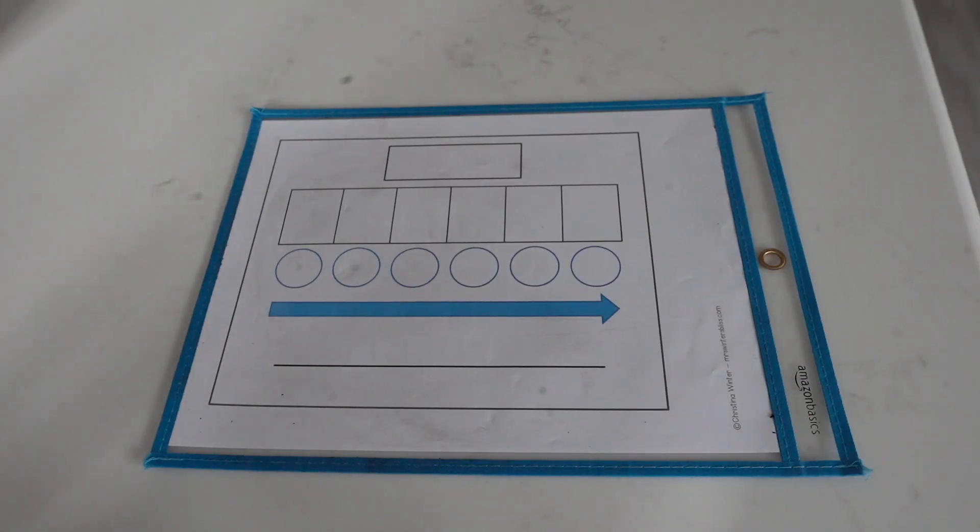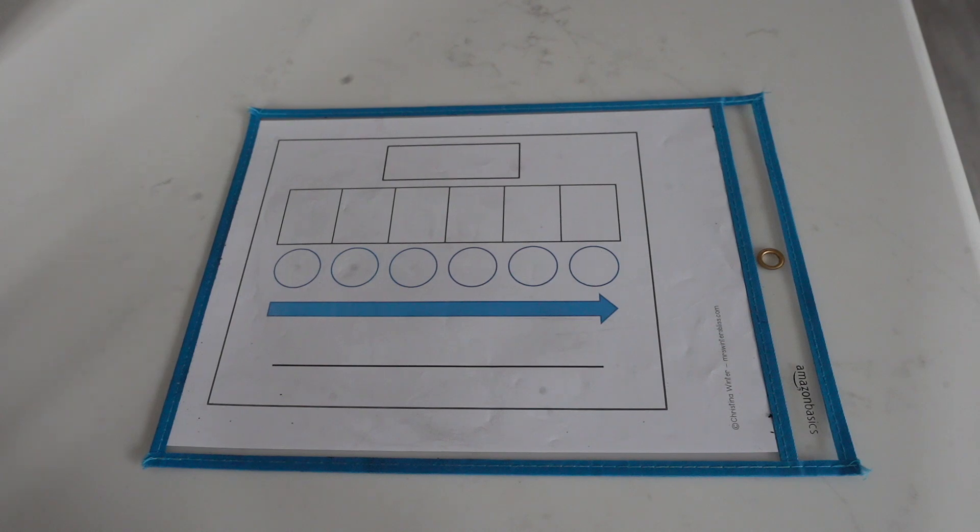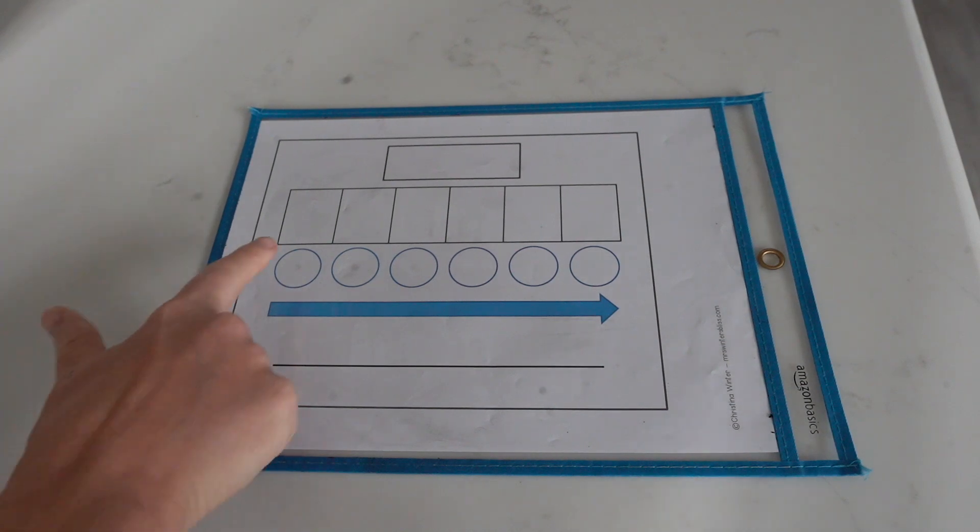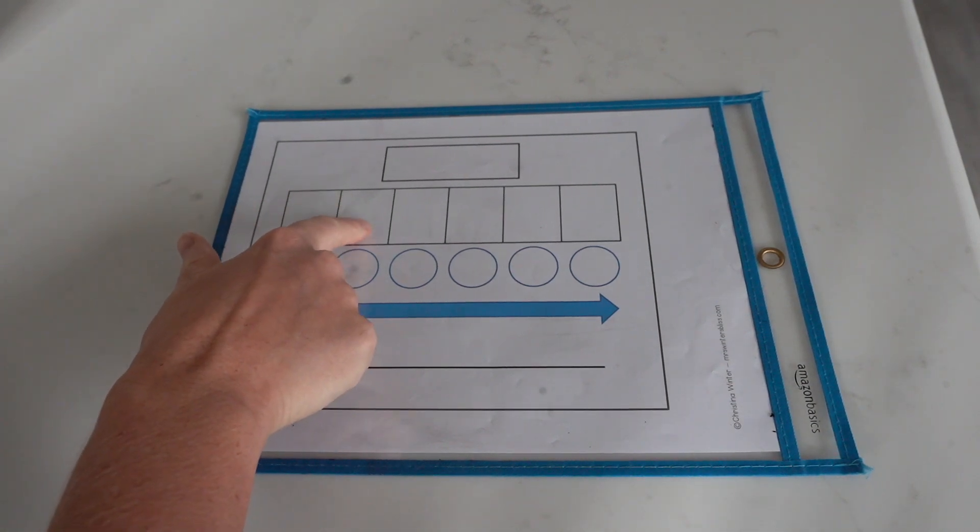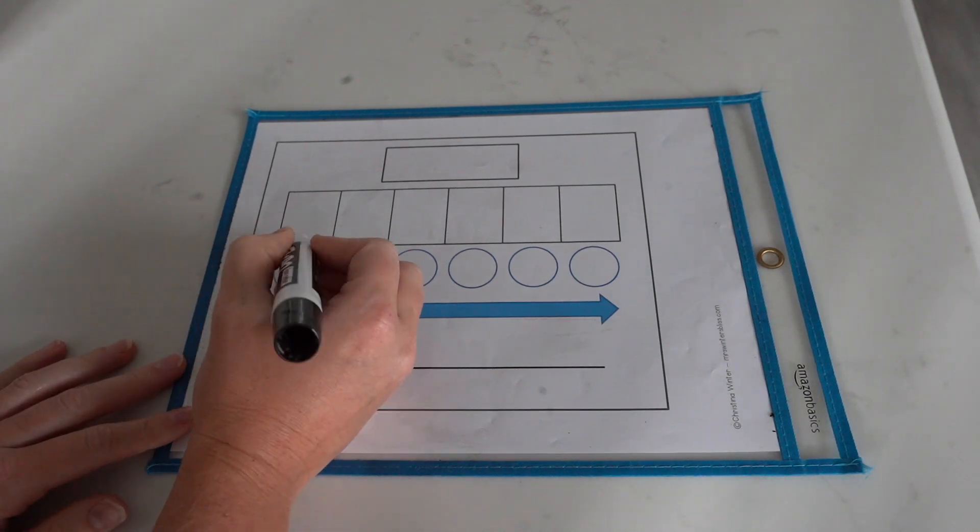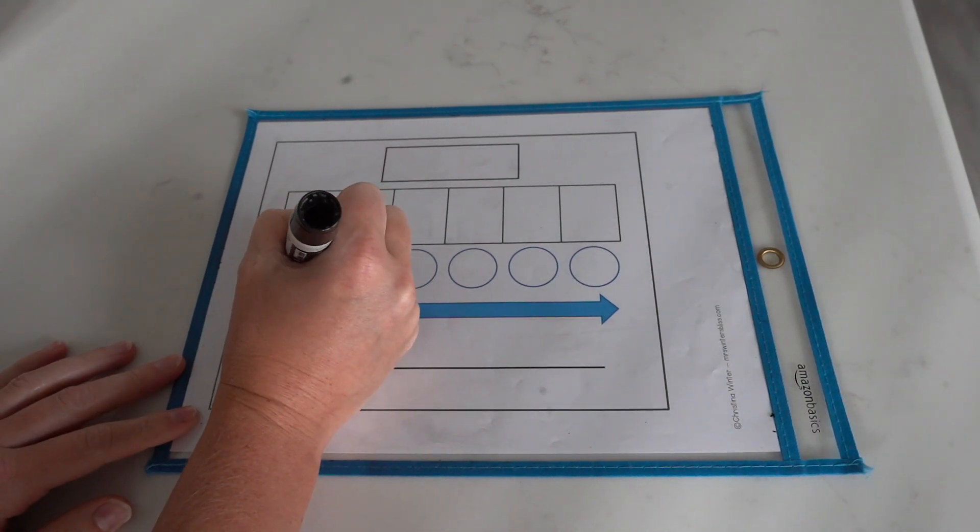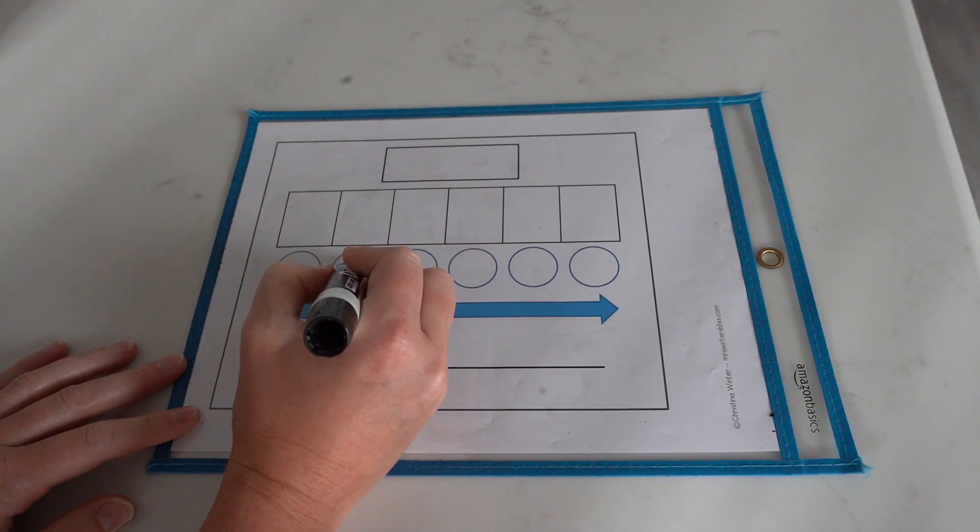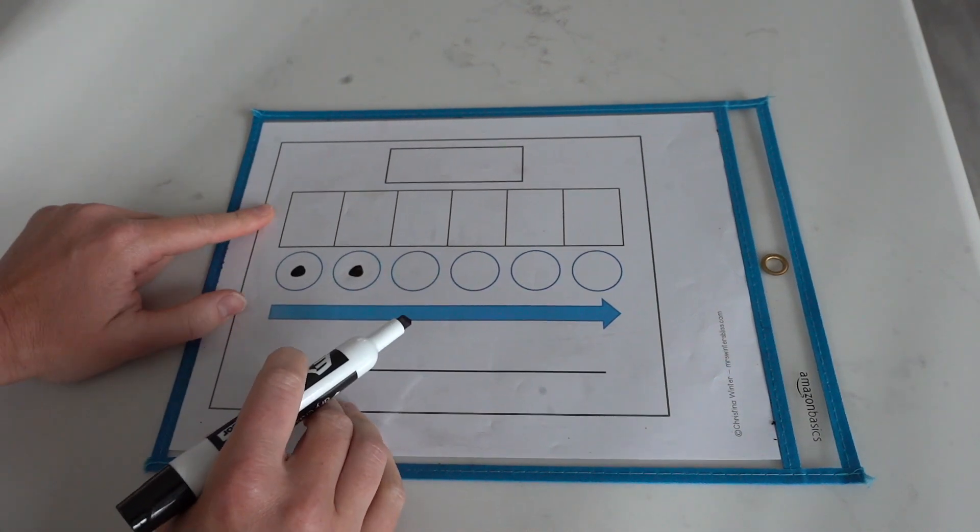The next word is the word 'do'. D, oo. How many phonemes? Two. D, oo. Let's spell the sounds.